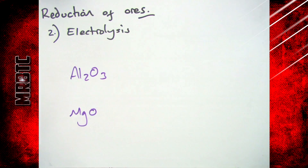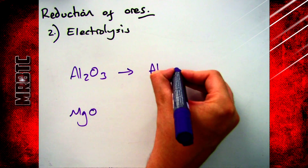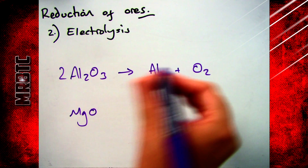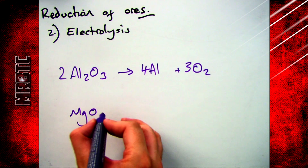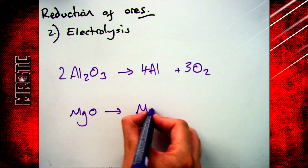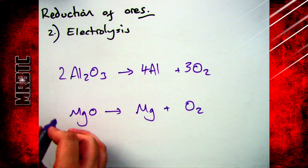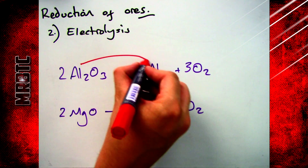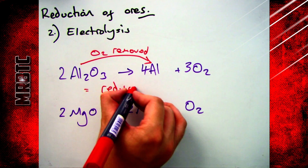The second method is electrolysis. If you have a reactive metal such as aluminium or magnesium, which are naturally found in their oxides — aluminium oxide and magnesium oxide — you can use electrolysis to break them down. You melt them, turn them into a liquid, and then you remove the oxygen by using electrolysis. Aluminium oxide has been reduced because it's had oxygen removed, and so has magnesium oxide.